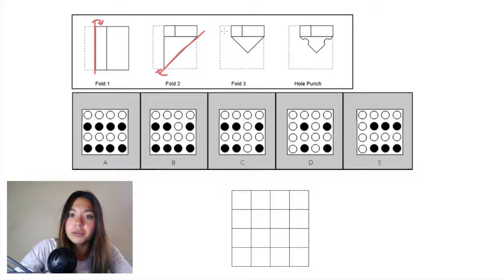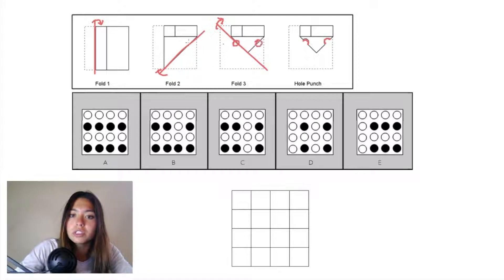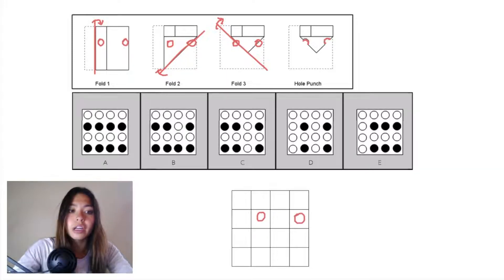In fold three we have another diagonal plane from corner to corner and we're folding up to the right, so this triangular piece from fold two is being folded up into this triangle, and we have two hole punches right here in pink. If you draw those on the previous folds you can see that they always end up on paper, so we can draw both of those right away here in our grid.